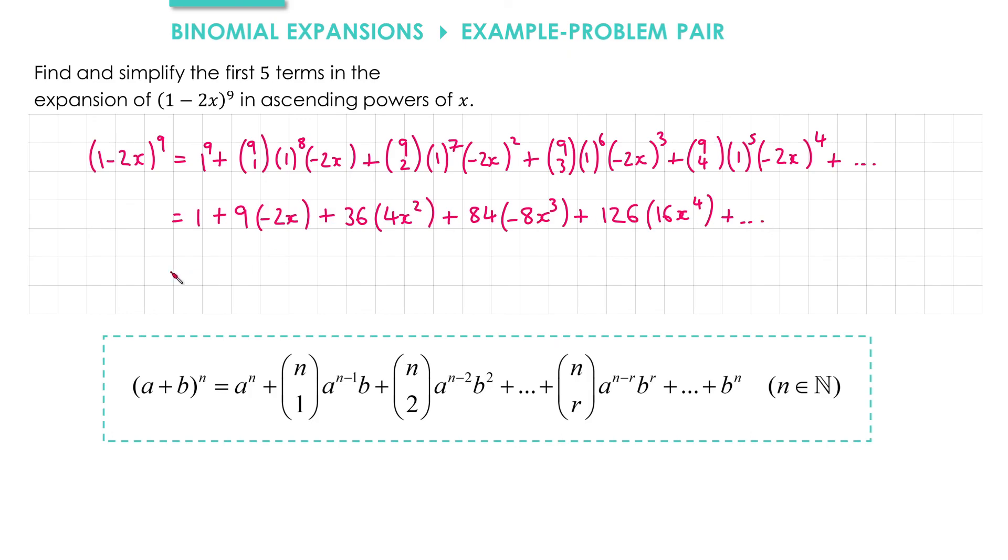Now we'll just tidy everything up a bit. We've got 1. 9 times negative 2x is negative 18x.